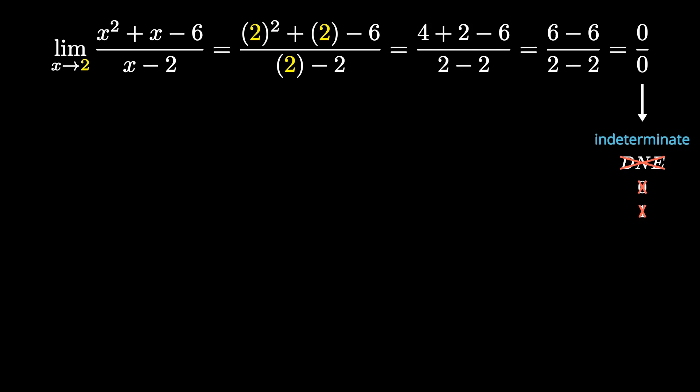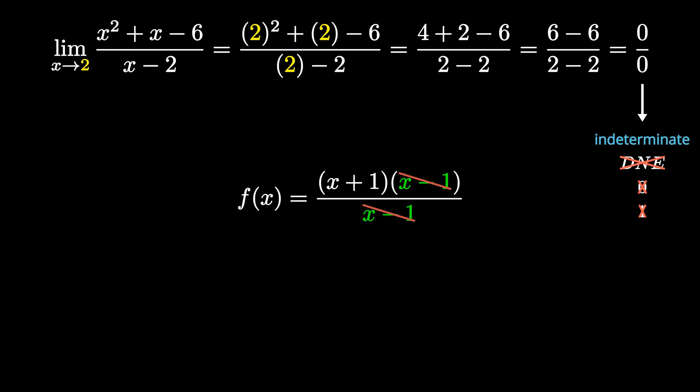In this case we have to use algebraic techniques to get out of this form. The goal with indeterminate limits is to cancel something out — specifically what we call holes. Holes go back to rational functions: a hole occurs when there's a common factor in both the numerator and denominator, creating a point of discontinuity.